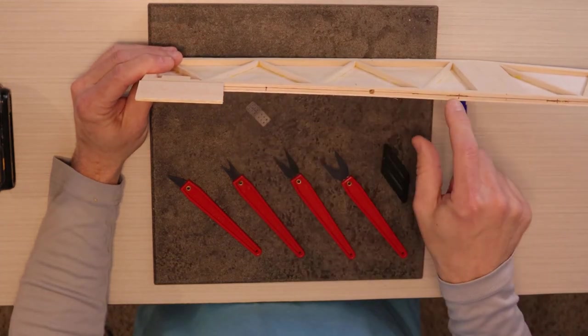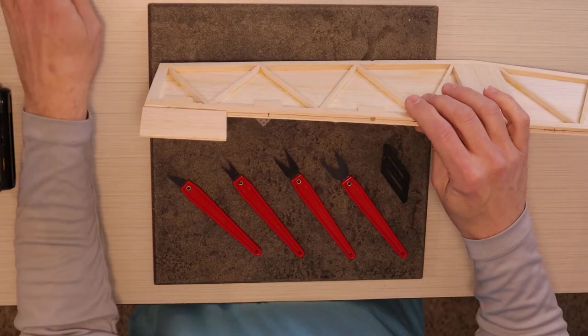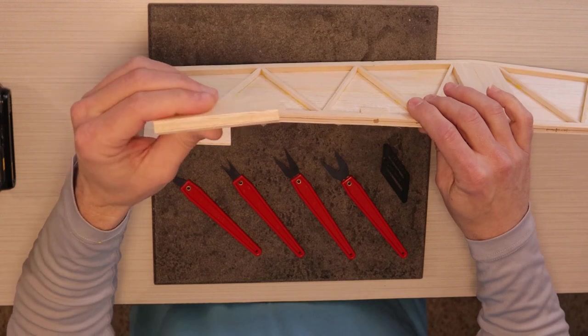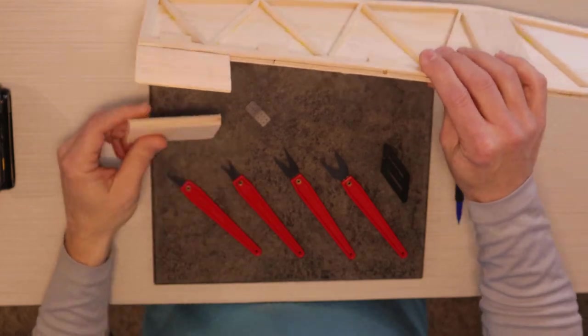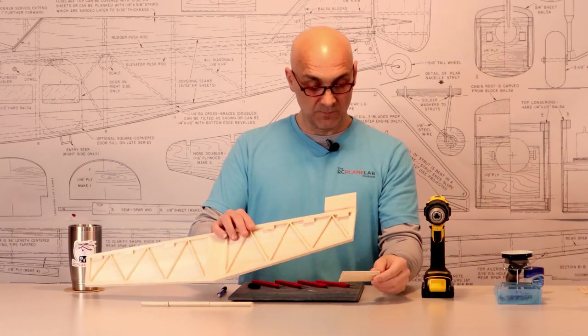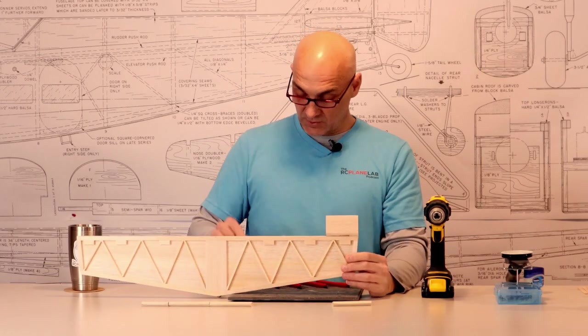I started with a center line right down the trailing edge of the stab. And I also have a very faint center line drawn on the leading edge of my actual control surface. So once we've got those marked, it's a pretty simple matter.